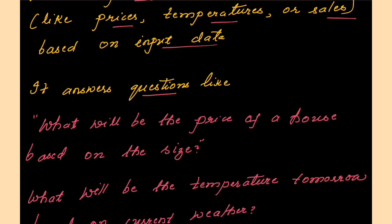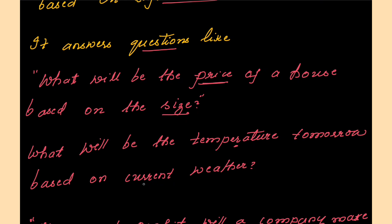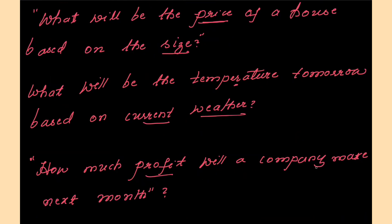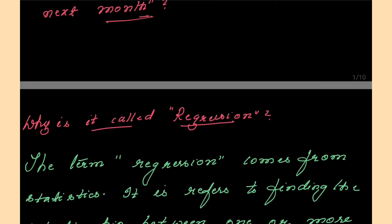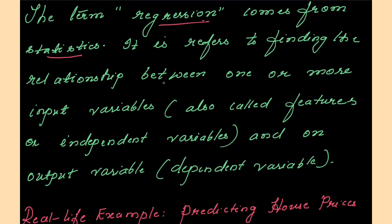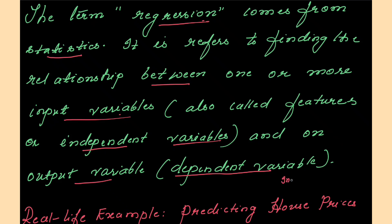It answers questions like: What will be the price of a house based on the size? What will be the temperature tomorrow based on the current weather? How much profit will a company make next month? The term regression comes from statistics — it refers to finding the relationship between one or more input variables, also called features or independent variables, and an output variable or the dependent variable.